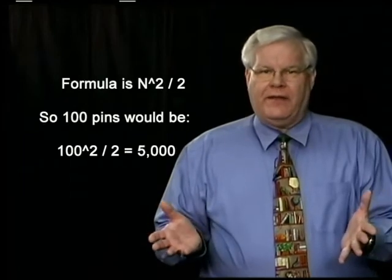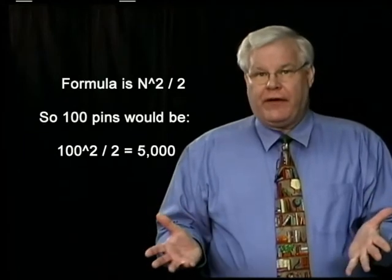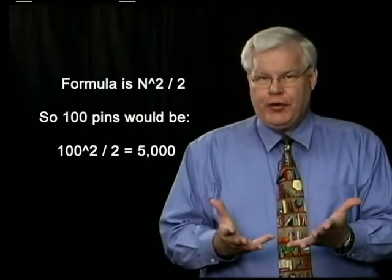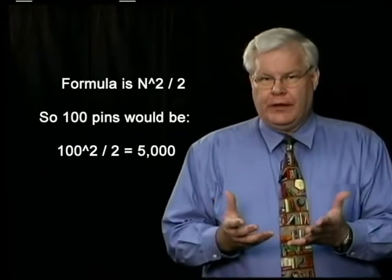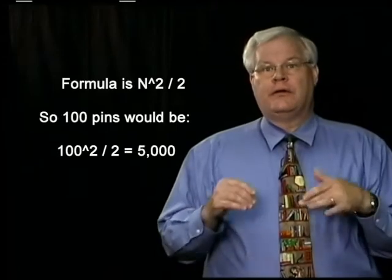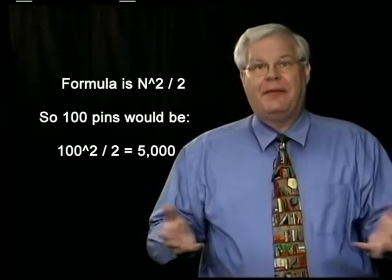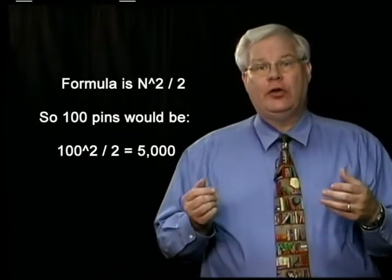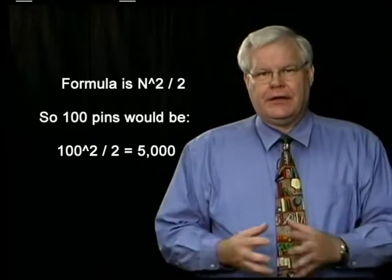Well, if you add 1, 2, 3, 4, all the way through 98, 99, and 100 — just add all those numbers up — you get 5,050. One way to estimate that is N squared divided by 2. So if you have 100 nodes, you square that to get 10,000, divide by 2, and you get 5,000.